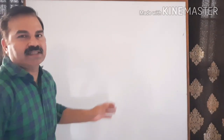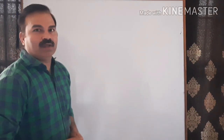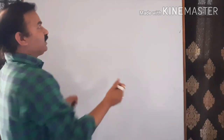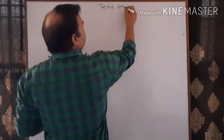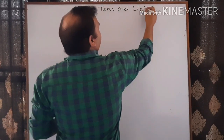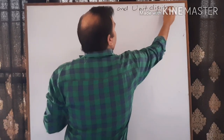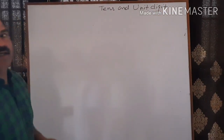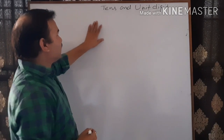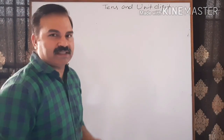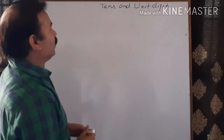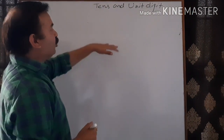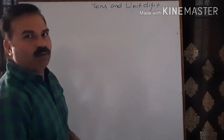Hello everyone. Today in this lecture I will teach you about numbers — how to find the square root using the tens and unit digit method. This method is basically helpful for three-digit, four-digit, and five-digit numbers. Before explaining the method, you have to remember one important thing.